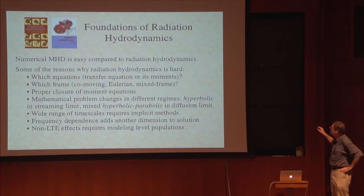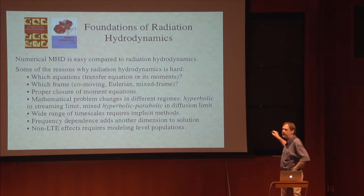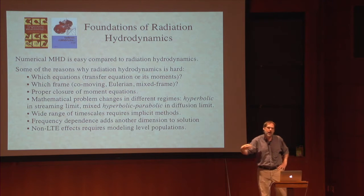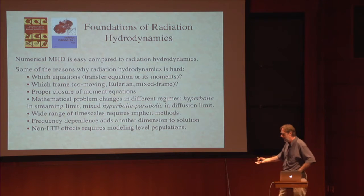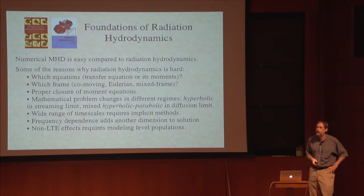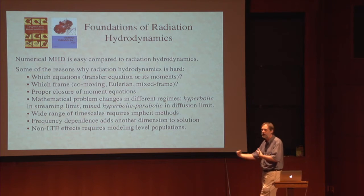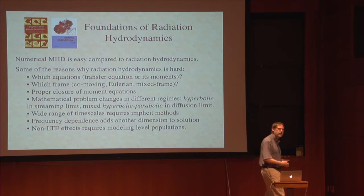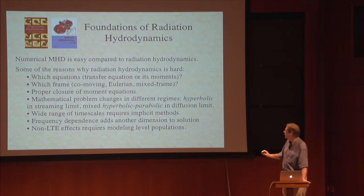So why is radiation hydrodynamics hard? Because which equations do we solve? Do we solve the radiative transfer equation directly or do we solve its moments? That's exactly analogous to asking whether we solve the collisionless Boltzmann equation for ions and electrons or solve the fluid equations — the moments of that Boltzmann equation. But unlike the plasma case, where there's a clear-cut answer based on collisionality, there's no clear-cut answer in radiation hydrodynamics because the photon mean free path varies enormously.